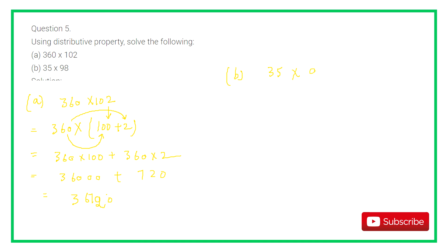For part B: 35 into 98. We break 98 as 100 minus 2. So 35 into (100 minus 2) becomes 35 into 100 minus 35 into 2, which equals 3500 minus 70, giving the answer 3430.